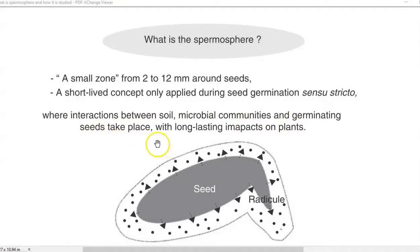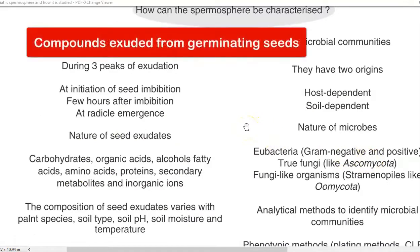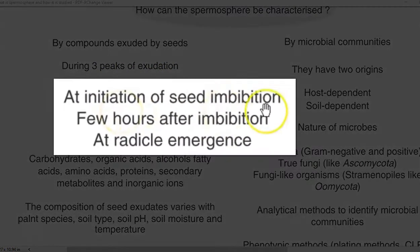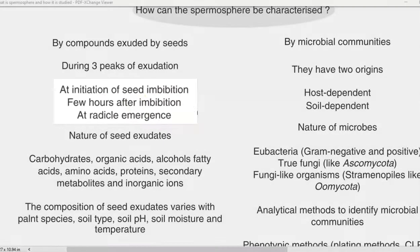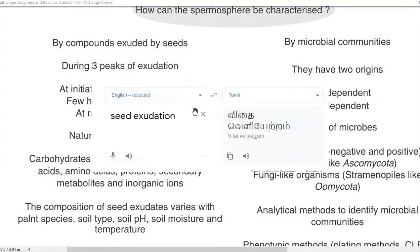There are three different peaks of exudation that can be observed from a seed. The first is initiation of exudation during seed imbibition. The second exudation occurs during the few hours after imbibition. The third kind of exudation is during the radicle emergence stage. Exudation involves the secretion of some chemicals from the imbibed seed, and these are called seed exudates.